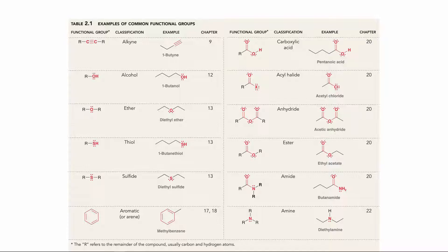This is Table 2.1 from the textbook, showing the common functional groups we'll be looking at. This pairs well with the IR lab you should be working on this week or next. In the IR lab, we'll look at how these different functional groups can be distinguished based on the infrared spectrum of the molecule. I'd also suggest making flashcards for each of these functional groups to help memorize them.